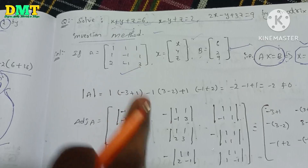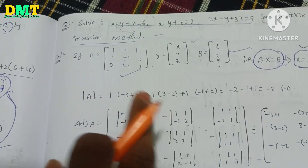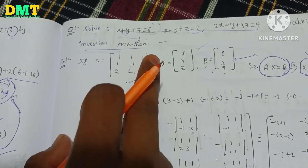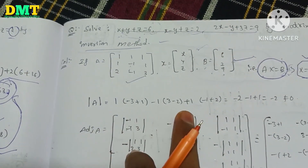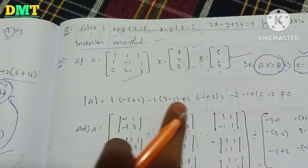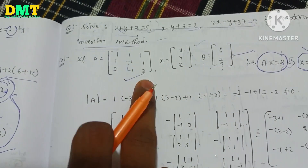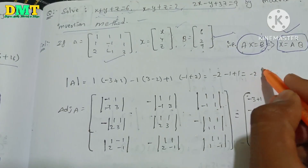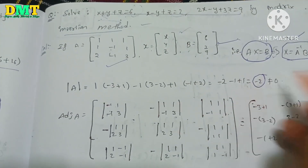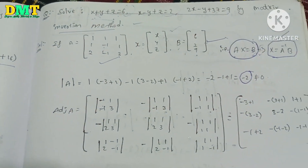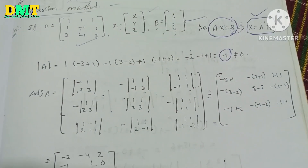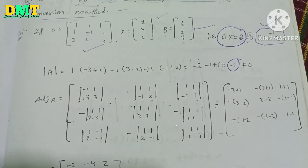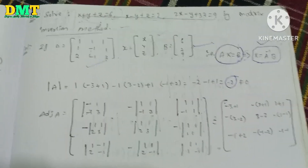Find the determinant: 1 times minus 3 plus 1, minus 1, minus 3, minus 2. We can see 1, minus 1, plus 2. That gives minus 2. So the determinant is minus 2.